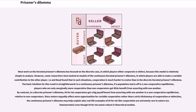Most work on the iterated prisoner's dilemma has focused on the discrete case, in which players either cooperate or defect, because this model is relatively simple to analyze. However, some researchers have looked at models of the continuous iterated prisoner's dilemma, in which players are able to make a variable contribution to the other player. Le and Boyd found that in such situations, cooperation is much harder to evolve than in the discrete iterated prisoner's dilemma.